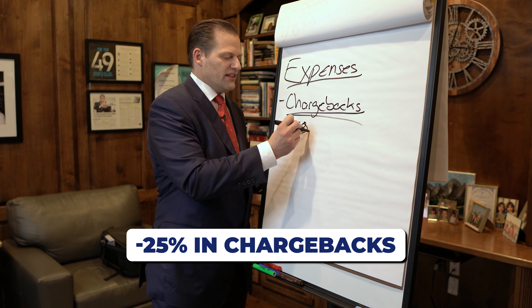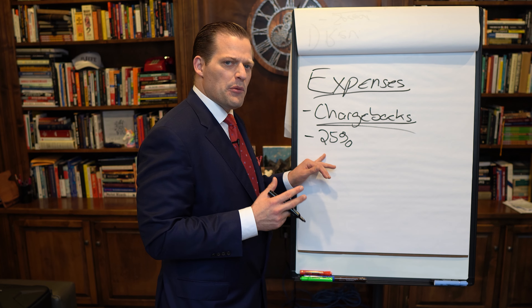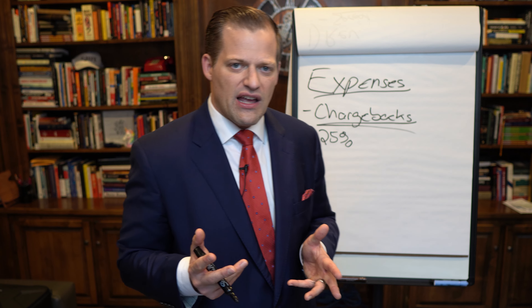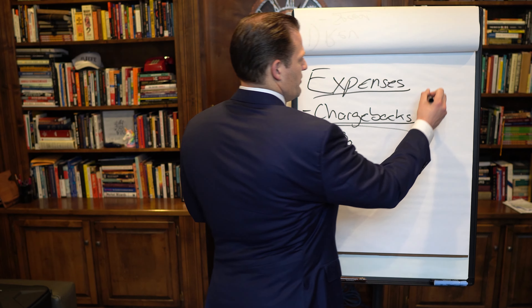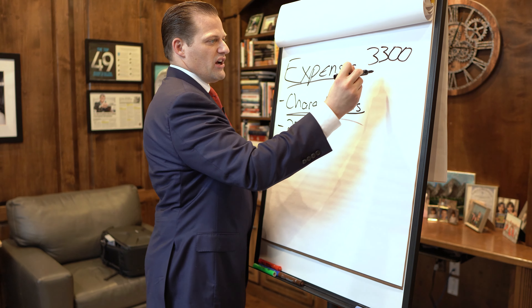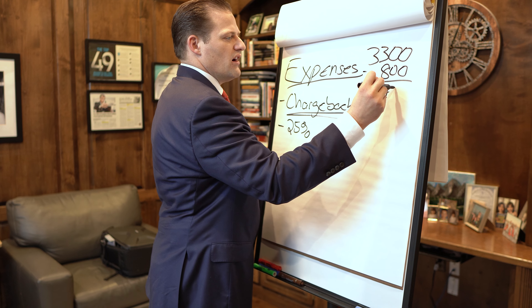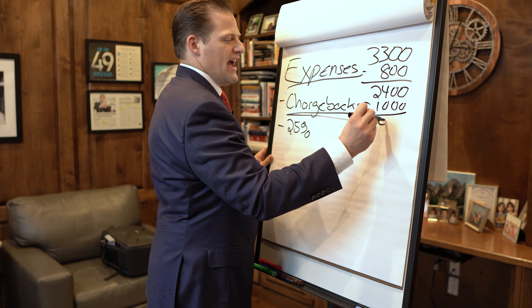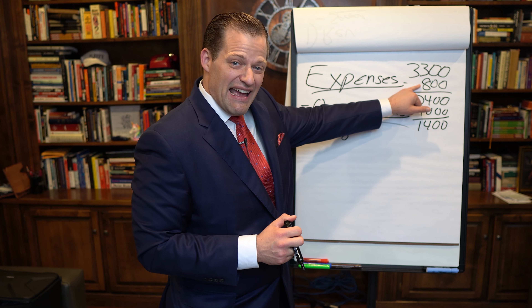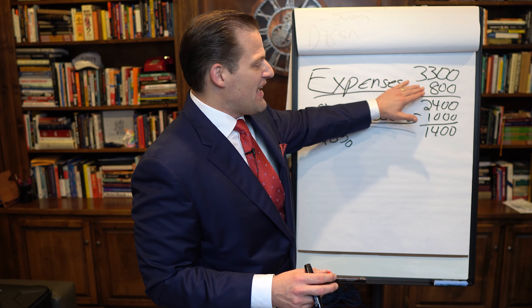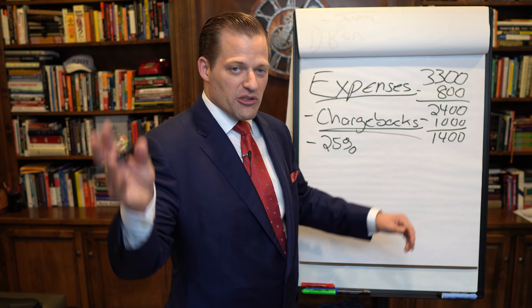Chargebacks are always a factor when projecting your income. Realistically, I'd say account for 25% of your business falling off the books — that's conservative but achievable to do better. Going back to our earlier example of $3,300, knocking off 25% is about $800, leaving $2,400 before expenses. With $1,000 in leads, your actual cashflow is closer to $1,400. You won't get that chargeback hit right away — it may take time — but I like accounting for it upfront so your projected income is realistic.